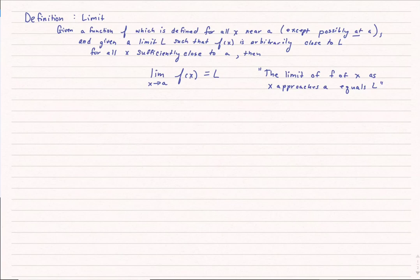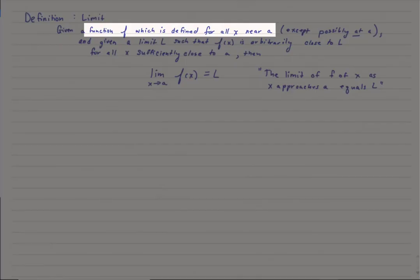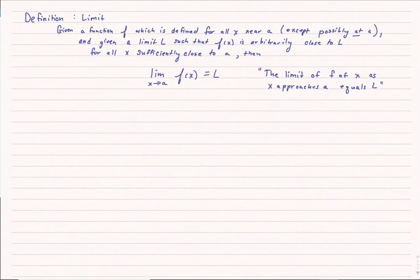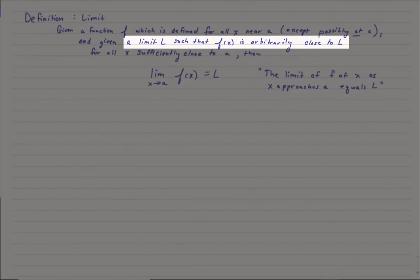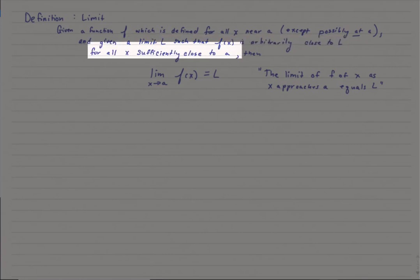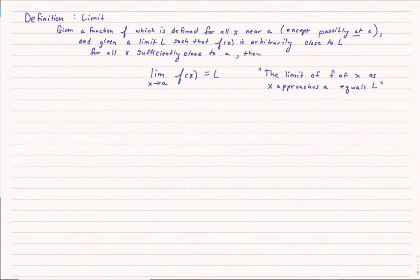Let's get more formal with the definition of limits. The definition of a limit is if I'm given a function f, which is defined for all x near some value a, except perhaps right at a, and if I'm given a limit L such that f of x is arbitrarily close to L for all x sufficiently close to that value a, then I can say the limit of f of x as x approaches a equals L. This is it written out in words. This is using mathematical notation.